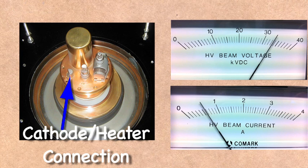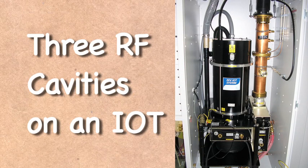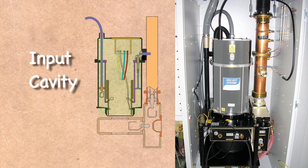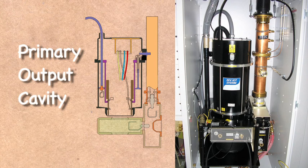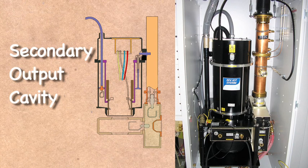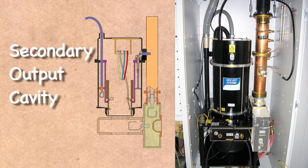Now, how do we amplify the RF signal? There are three RF cavities for an IoT: the input cavity, primary output cavity, and the secondary output cavity.